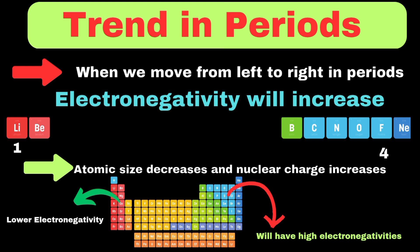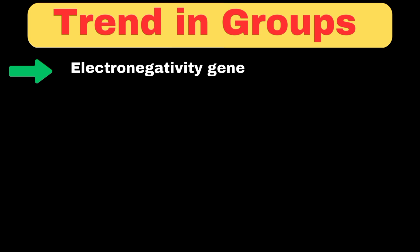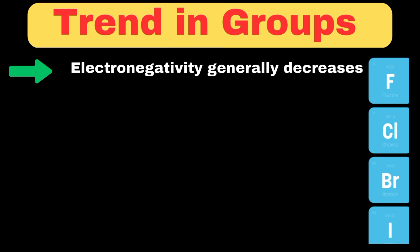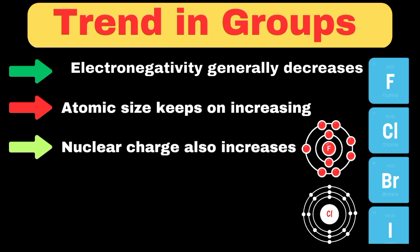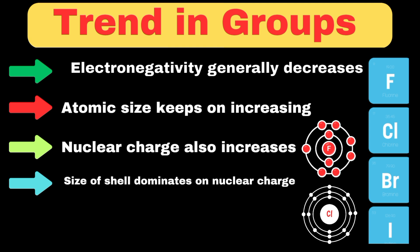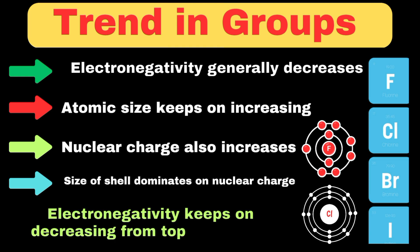Moving to the trend down a group, electronegativity generally decreases as we go down. Looking at the halogen group — fluorine, chlorine, bromine, and iodine — as we go down the group, each atom becomes larger and the outer electrons move further from the nucleus. Although the nuclear charge increases, the increase in the electronic cloud predominates over the nuclear charge. So due to these factors, electronegativity keeps on decreasing from top to bottom in a group.